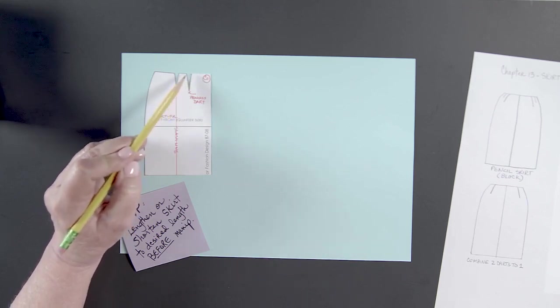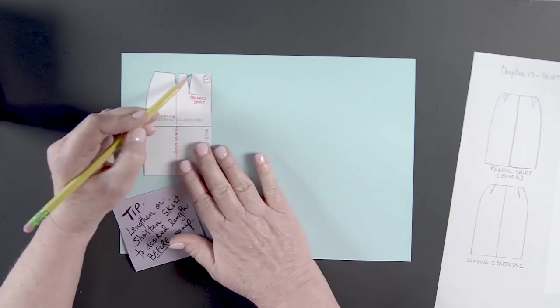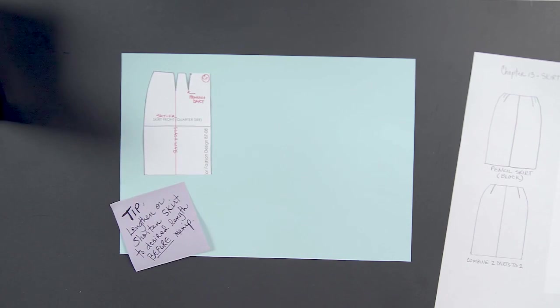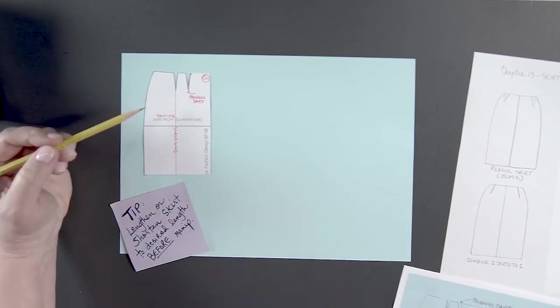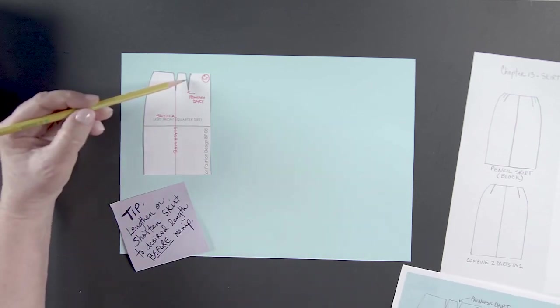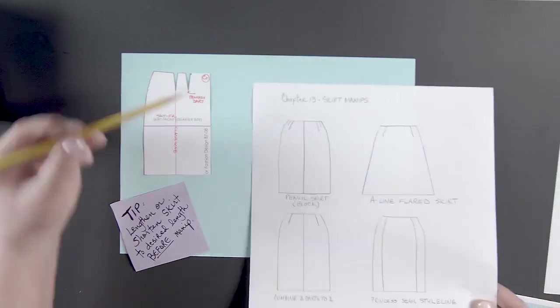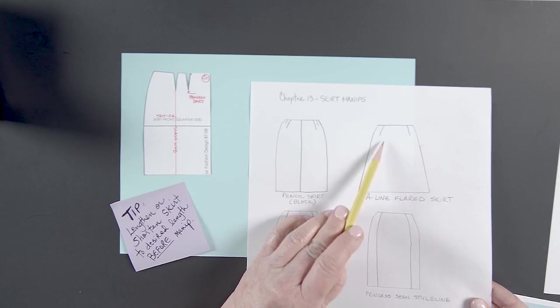call this princess dart, this first dart here. So this measurement is real important here. So what we want to do is we want to leave the princess dart here because we're going to sew that up.